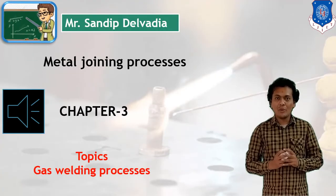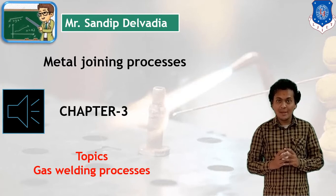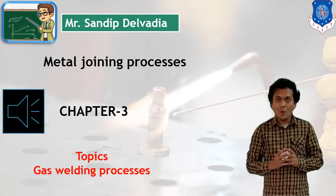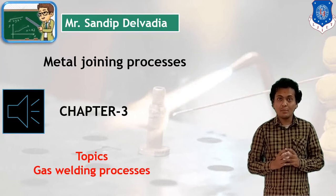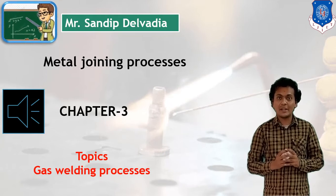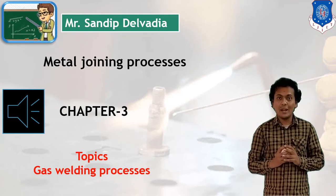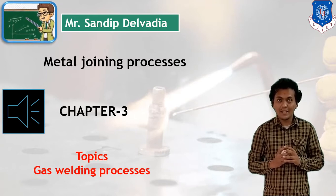Hello students, in Manufacturing Technology we have started the chapter Metal Joining Processes. Welding is one of the processes which we can use for joining of two metal plates. Welding is a metal joining process in which heat is generated and this heat can be utilized for joining of two plates together. In today's session, we are going to discuss the gas welding process.